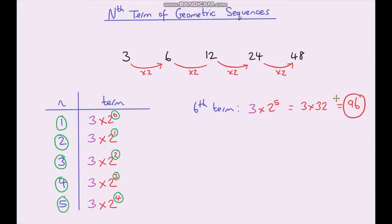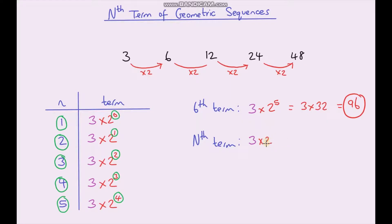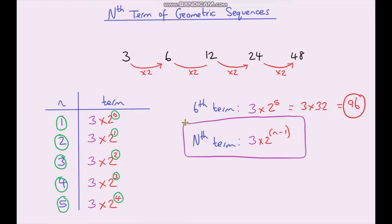3 times 32 is 96, and we know that's correct because following the pattern, 48 times 2 is 96. Now we can generalize this rule. For the nth term of our sequence, we know it starts with 3 and is multiplied by 2, with the index always one less than the term number. So our index is n minus 1. This gives us the nth term: 3 times 2 to the power n minus 1.